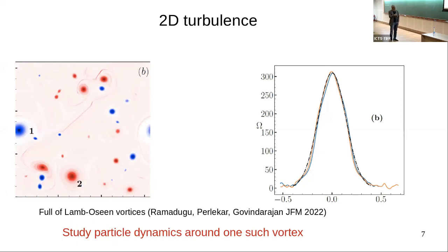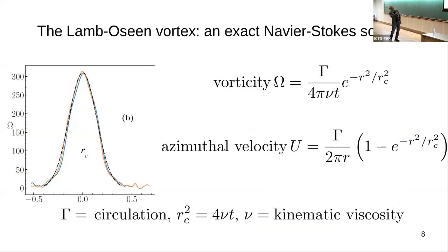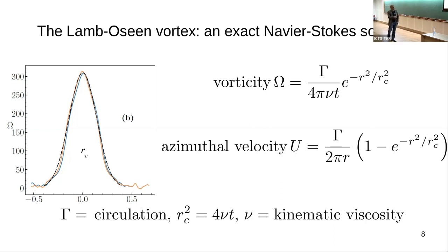The context in which friends of ours started studying this problem is turbulent flow. 2D turbulent flow can be thought of as a soup of vortices — these Gaussian-shaped vortices known as Lamb-Oseen vortices. One such vortex has an azimuthal velocity field with a characteristic profile and a vorticity field with a Gaussian profile. It's an exact solution of Navier-Stokes, characterized by a strength which is the circulation — the integral of the velocity around a closed path — and a characteristic size given by sqrt(2 nu t), where nu is the kinematic viscosity.